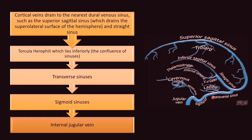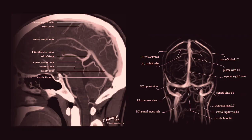Cortical veins drain to the nearest dural venous sinus such as the superior sagittal sinus and straight sinus, which form a confluence known as the torcula herophili, including the straight sinus, superior sagittal sinus, transverse sinus, and occipital sinus. These drain into the transverse sinus, then the sigmoid sinus, and finally into the internal jugular vein. CT and MR venogram images show the superior sagittal sinus, both internal cerebral veins joining the great vein of Galen draining into the straight sinus, and both transverse sinuses draining into the sigmoid sinus and IJV.